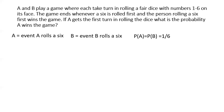What are the probabilities of the complements of those events? The probability of A not rolling a 6 at one turn — that's five other equally probable outcomes — so that would be 5/6. Similarly, the probability of B not rolling a 6 at any one of his turns would also be equal to 5/6.